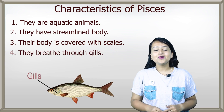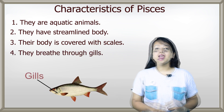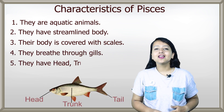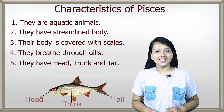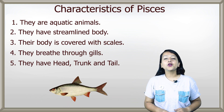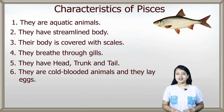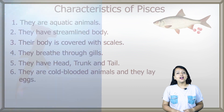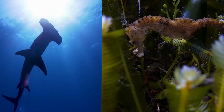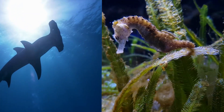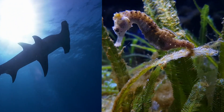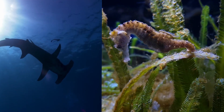They breathe through gills. They have head, trunk and tail. They are cold blooded animals and they lay eggs. Shark, sea horse and different kinds of fish are examples of class Pisces.